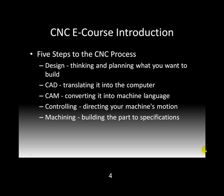Here are the five overall steps to the CNC process — the steps that every single person goes through when doing a CNC project. The first one is design: you're thinking and planning on what you want to do and what you want to build. The next one is CAD, which is computer-aided design — you're translating your design into the computer so you can manipulate it. Then CAM, where you're converting that design into a machine's language, very specific to your type of machine and tooling. Then controlling, where you're directing that machine's motion in a very specific order of movement. And finally, machining — building that part to its specifications.